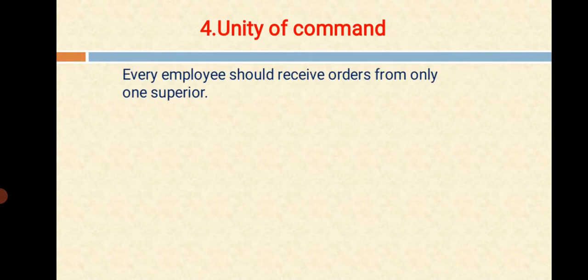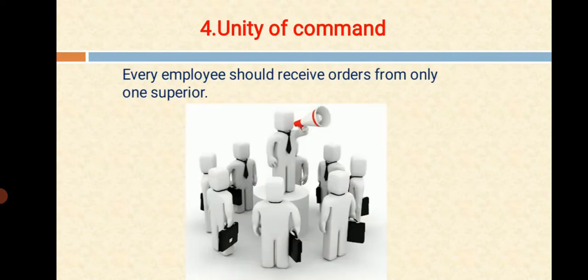And the next one is Unity of Command. Every employee should receive orders from only one superior. This means an employee should have only one boss and follow his command. If an employee has to follow more than one boss, that begins a conflict of interest and can create confusion.